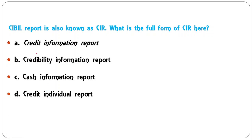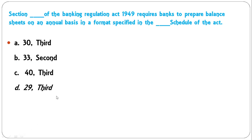The CIBIL report is also known as CIR. What is the full form of CIR? It stands for Credit Information Report, so A is the correct answer.